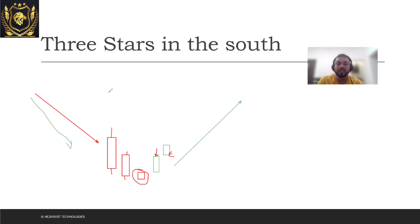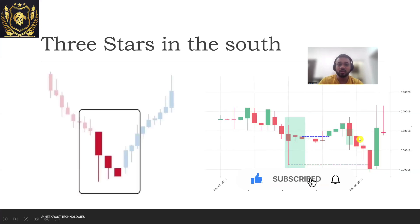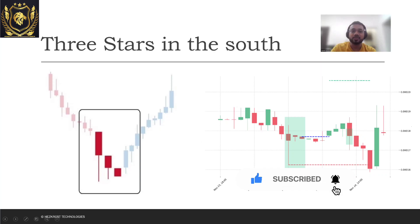So this is exactly what the Three Stars in the South pattern tells about. Let's look at it by using some examples. There are two examples which I would be giving for this particular session. So these are the two patterns where you can see Three Stars in the South getting formed.